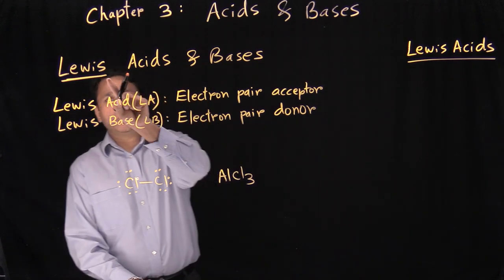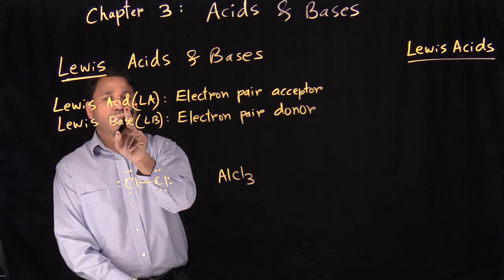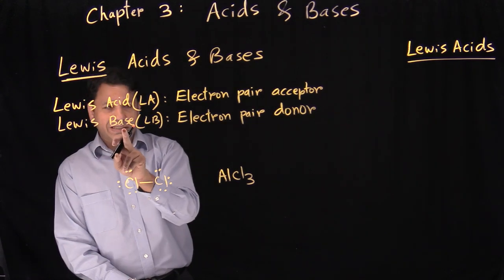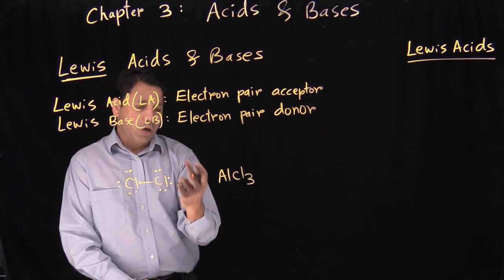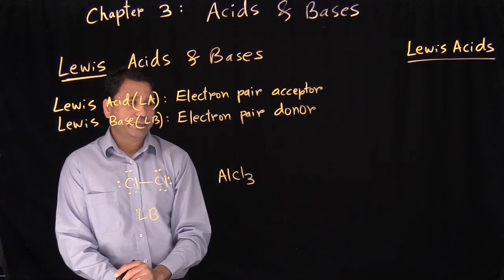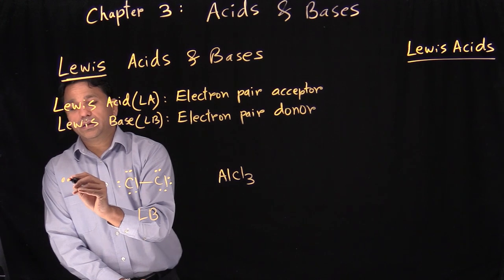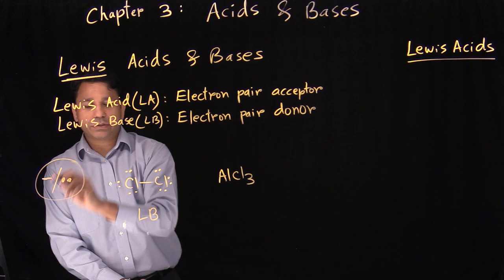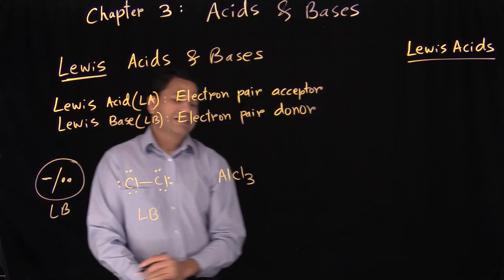Instead, we are looking at Lewis acids and bases. By definition, Lewis acids are electron pair acceptors, and Lewis bases are electron pair donors. Anything which has an electron pair — that can be a negative charge or an electron pair — can be a Lewis base. Those are your Lewis bases in general.